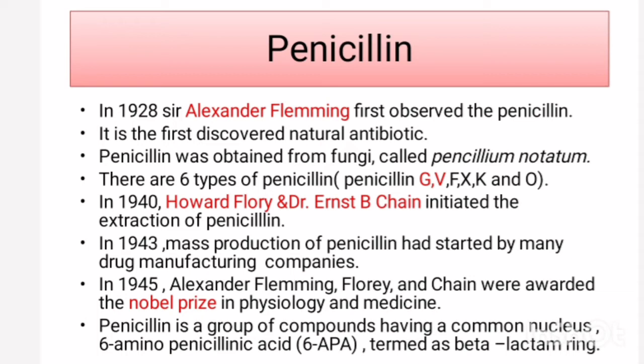Penicillins are classified into natural penicillin and semi-synthetic penicillin. There are six types of penicillin: Penicillin G, Penicillin V, Penicillin F, X, K, and Penicillin O. In 1940, Florey and Ernest B. Chain initiated the extraction of penicillin.